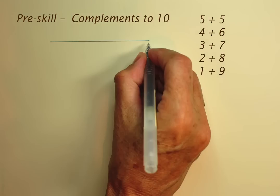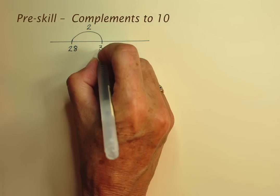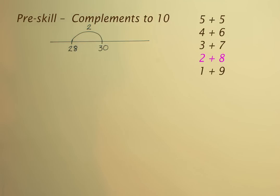I'll briefly show you what I mean by the pre-skills that I just mentioned. Complements to 10 are the five facts that tell us how 10 can be built from two components. We need to know that adding, say, 2 to 28 will get us to 30 because 2 and 8 are complements of 10, and that the same fact tells us that any number, no matter how large, ending in 8, will need 2 to be added to reach the next multiple of 10.